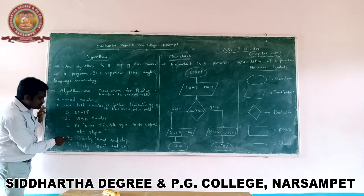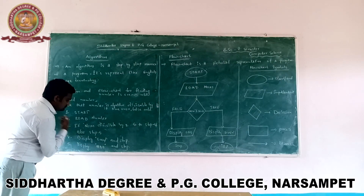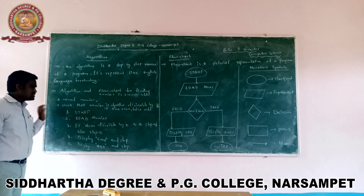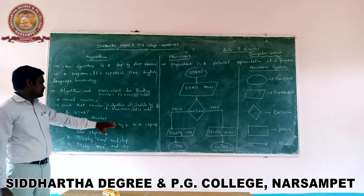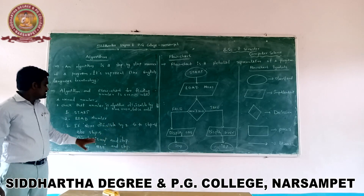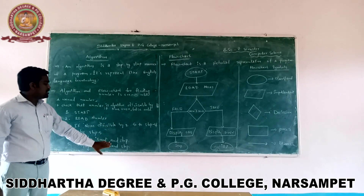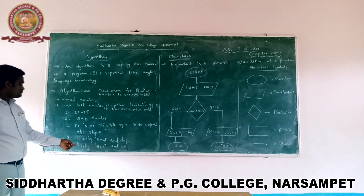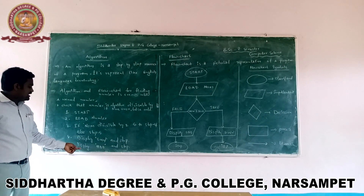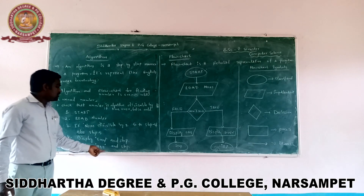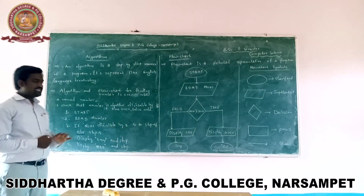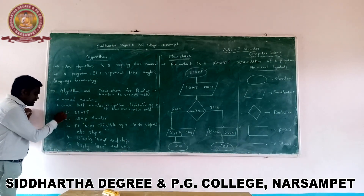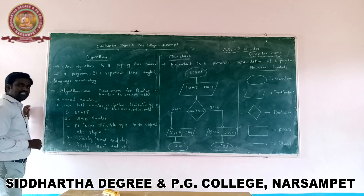Step 4: Display 'Even'. If the number is divisible by 2, it displays 'Even' and then ends the process. Step 5: Otherwise, display 'Odd'. This completes the algorithm in a step-by-step manner.